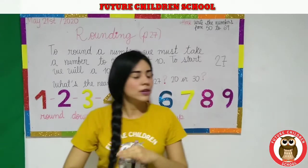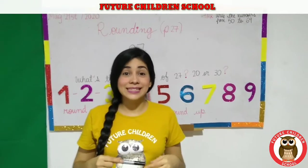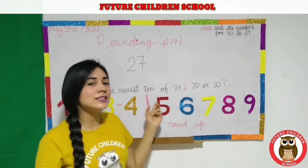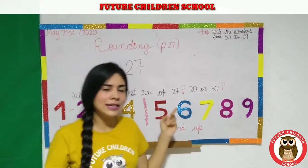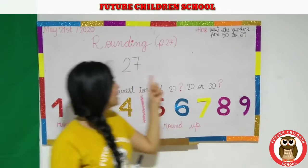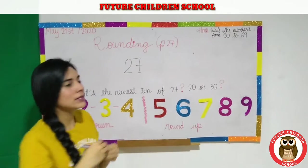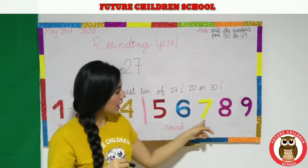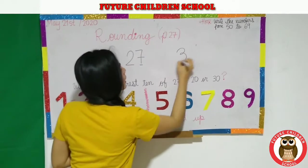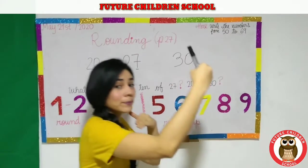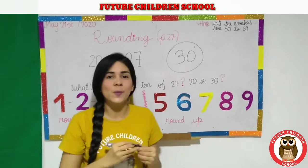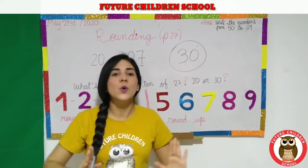A student says: I don't understand yet. No problem — I'm going to explain better. The example is number 27. The question is: what is the nearest ten to 27? Is it 20 or 30? Pay attention — what is the ones digit of 27? It's 7. So you have to round that. Choose 20 or 30 — what do you think? 30. Very good. I'm going to explain with the 100 square.